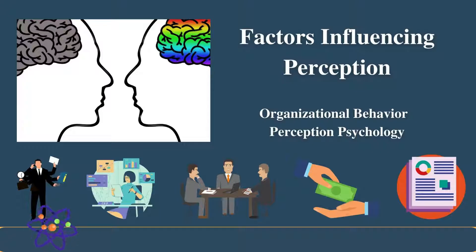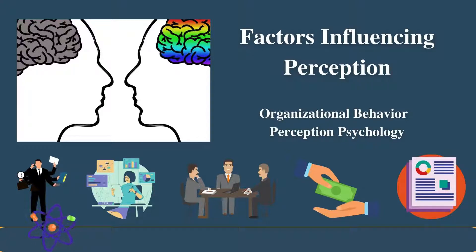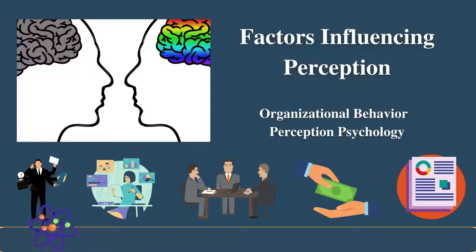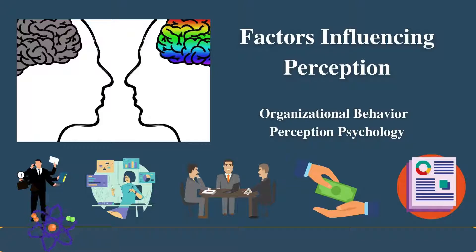Several factors influence perception, shaping how individuals interpret information and experiences. These include the characteristics of the perceiver, such as attitudes, motives, interests, experiences, and expectations. For example, a person's attitude towards their job can color their perception of workplace events and interactions. Characteristics of the target being observed — such as novelty, motion, sound, size, background, proximity, and similarity — also play a significant role. Additionally, the context of the situation, including the time, work setting, and social setting, can profoundly affect perception.